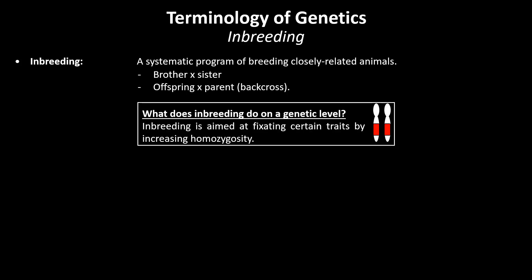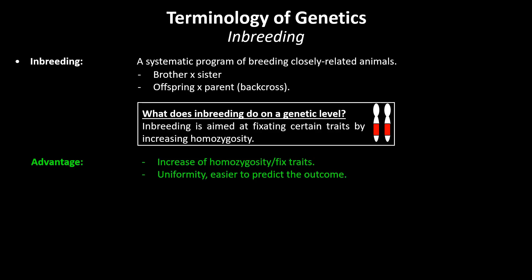But what does inbreeding do on a genetic level? Inbreeding is aimed at fixating certain traits by increasing homozygosity. Inbred animals will breed true for various traits due to an increased homozygosity. Inbreeding increases the uniformity within a line, which makes it easier to predict the outcome. Further inbreeding will increase the chance to discover but also fix recessive traits.